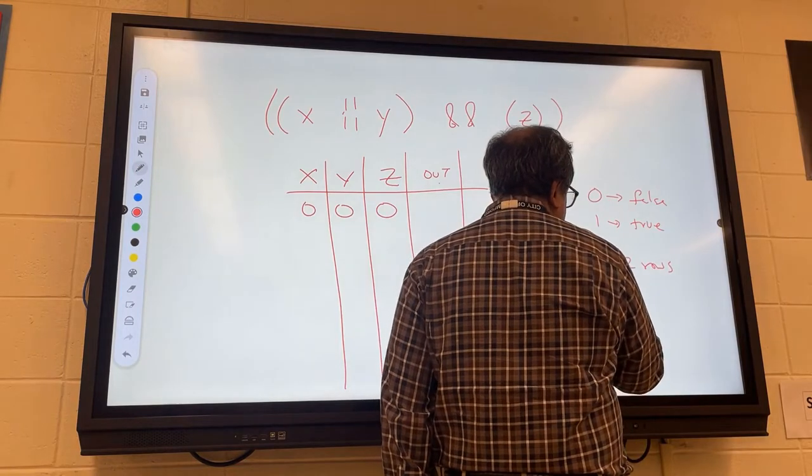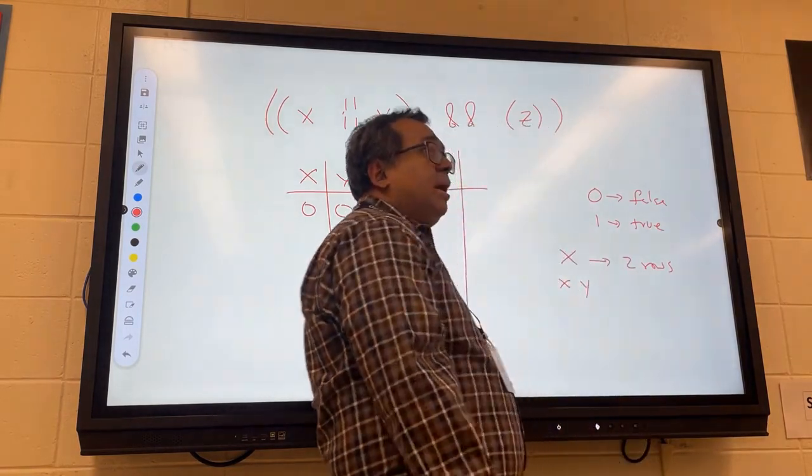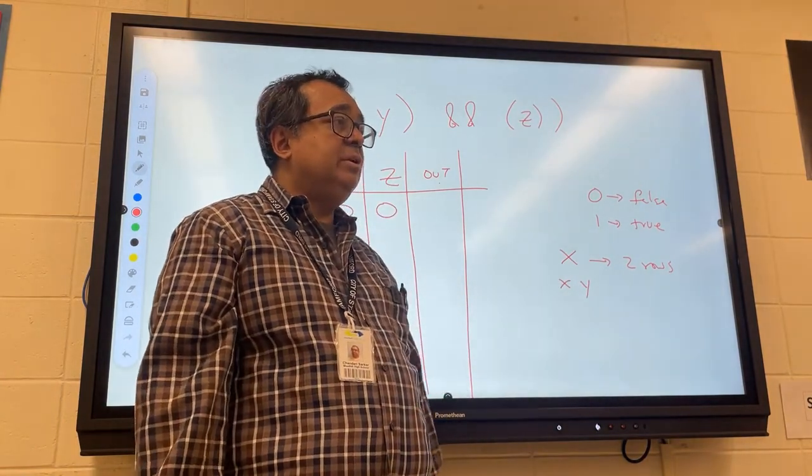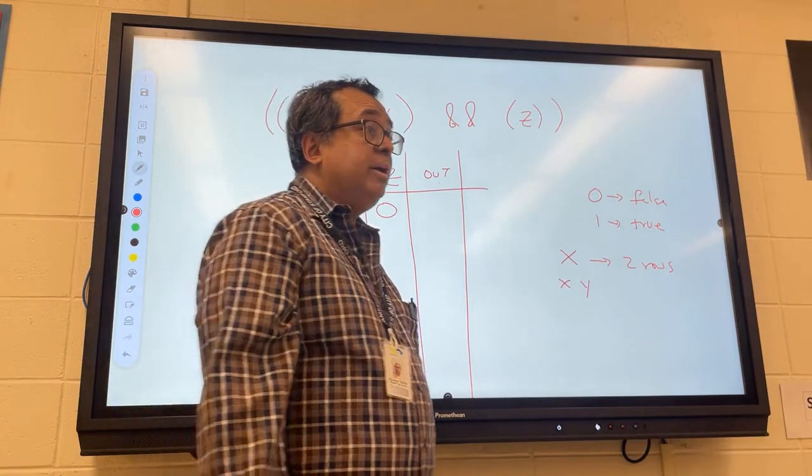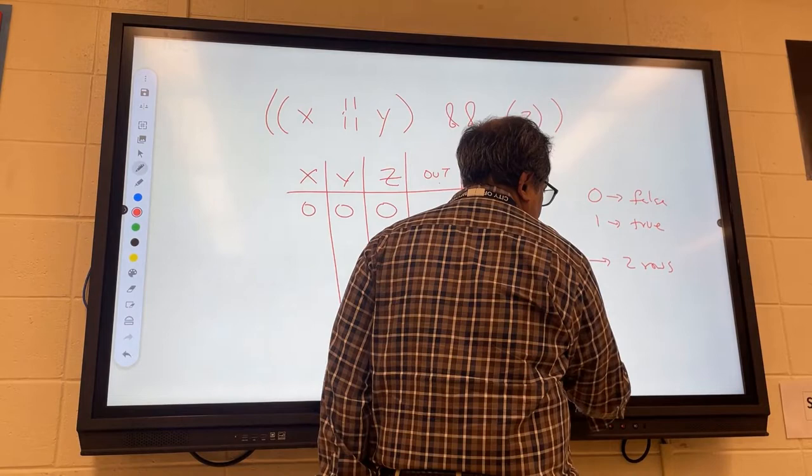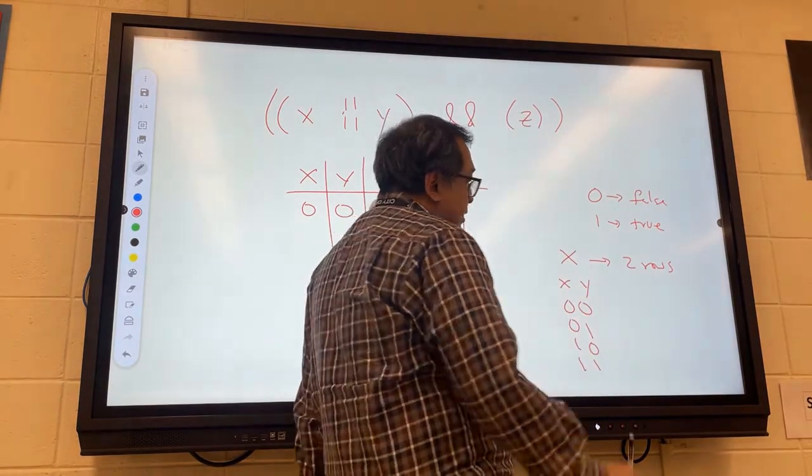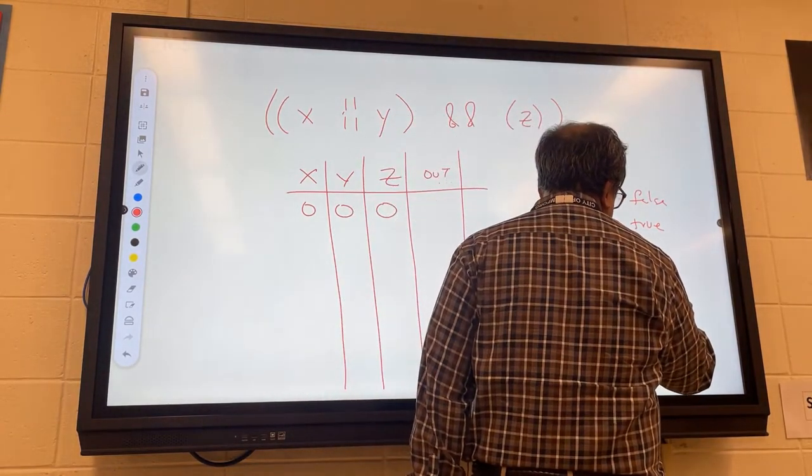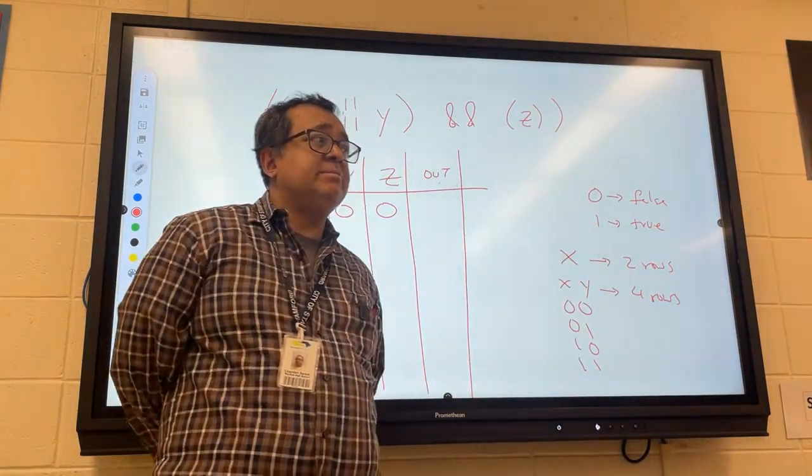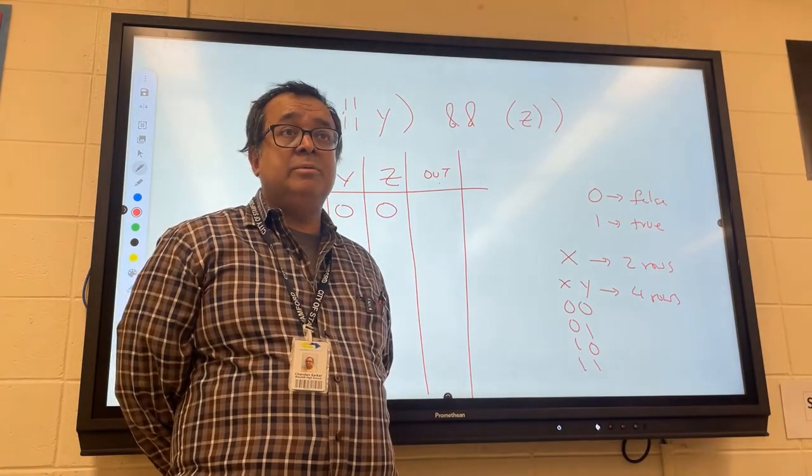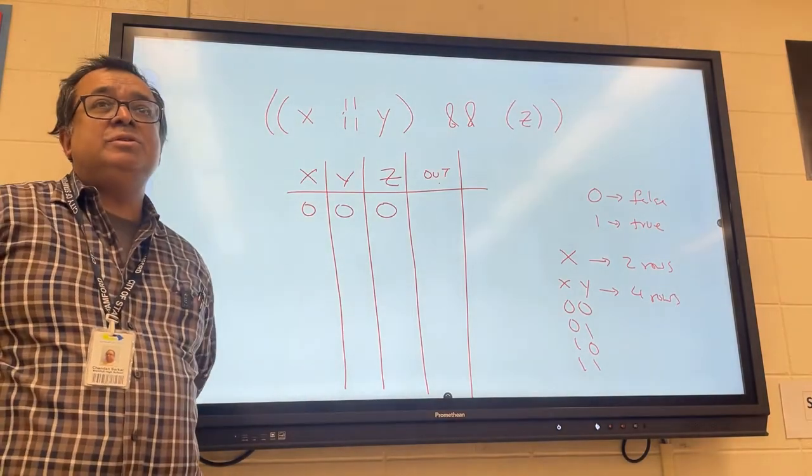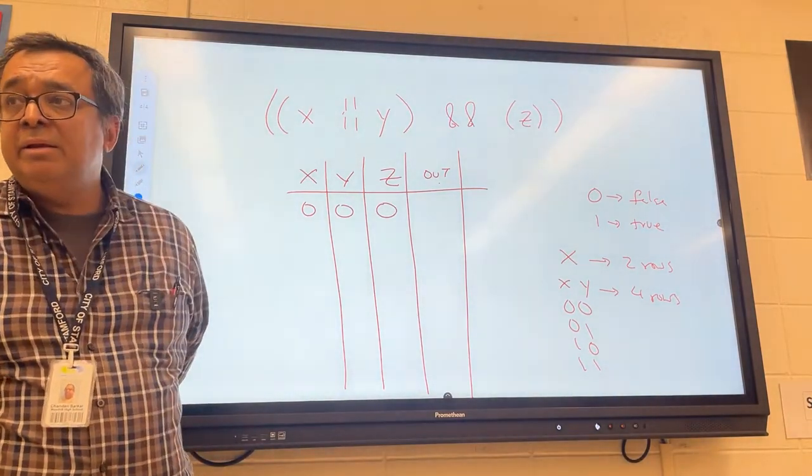Now let's say that there were two variables. How many different possibilities are there for zeros and ones in the two variables? Yes, sir. Four. Here they are. Look. Zero, zero, zero, one, one, zero, and one, one. You see that? So this is going to be four rows. And Sawyer is sticking to the idea that now if there's three, there must be six. But I say no. Three variables. How many rows? Yes, Miss Kaylin? Eight. Eight.